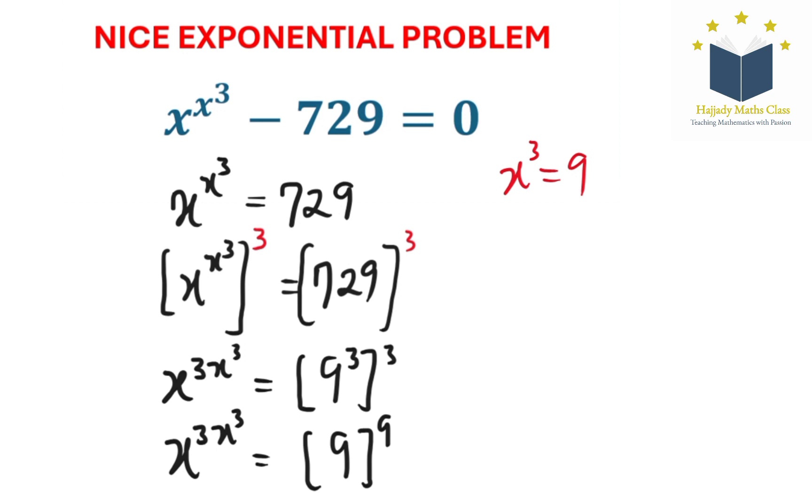Then finding the cube root of both sides here, I'm going to have the cube root of x to the power of 3 equals to the cube root of 9. Then here the cube root is going to cancel out the power, so here I'm going to have my x equals to the cube root of 9.